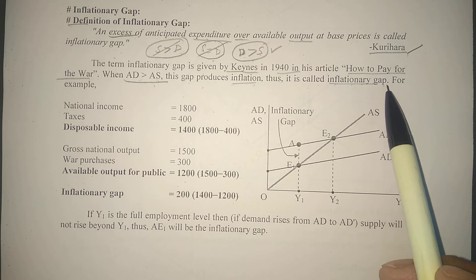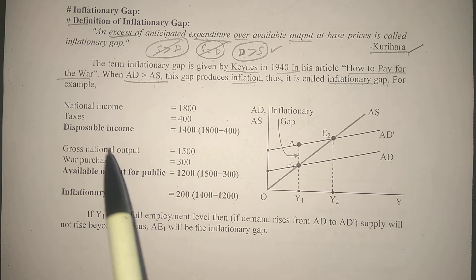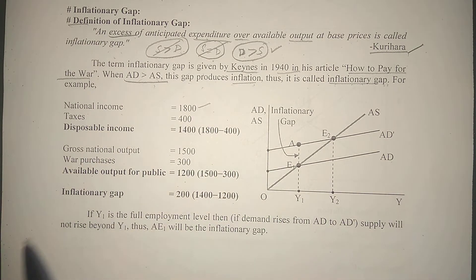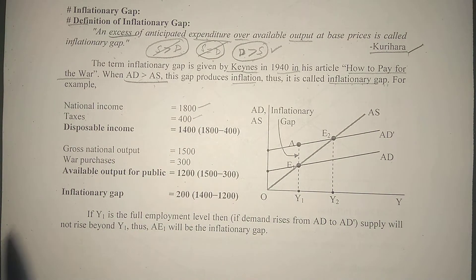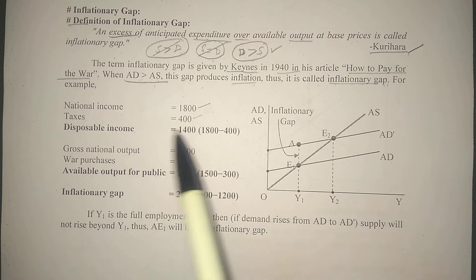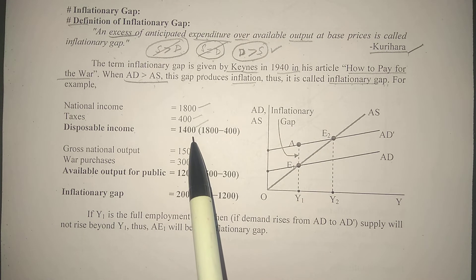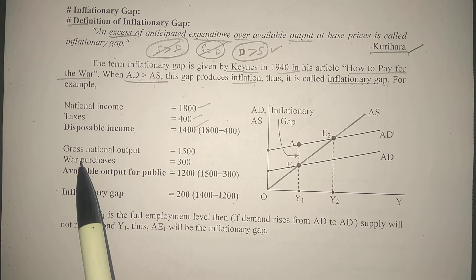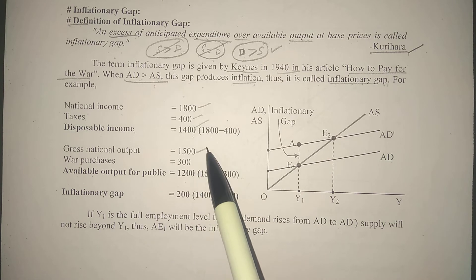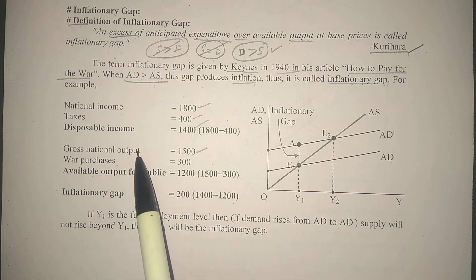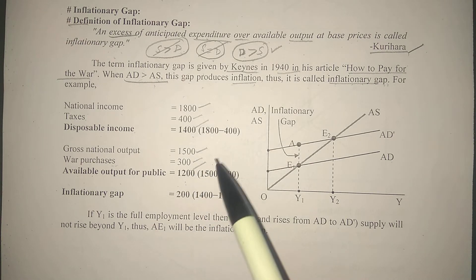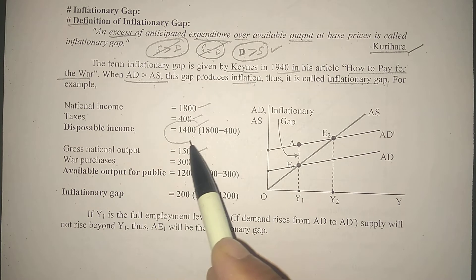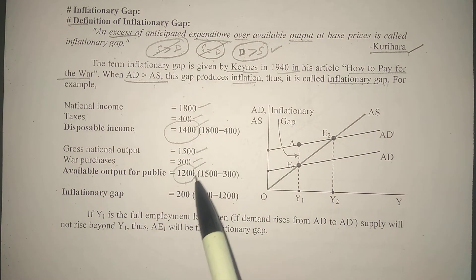अब इस example के साथ diagram के साथ इसको समझाया हुआ है। Suppose करो national income है 1800 — total country में जो income है। इसके उपर मान लो taxes लग गए 400, तो लोगों के पास खर्चने के लिए जो disposable income है, it remained 1400. जो total output है — gross national output — suppose it is 1500. And from this output, war purchases — मान लो government ने जो purchase किया — that is 300. So available output for public that is only 1200.